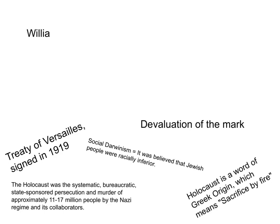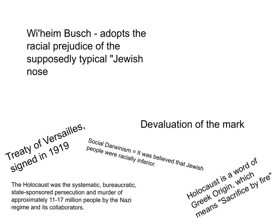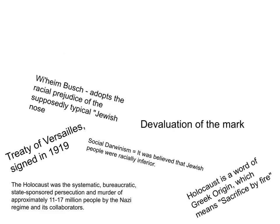We also talked about Wilhelm Busch — I'm giving the American version of his name — who is the person who adopted the racial prejudice of the supposed typical so-called 'Jewish nose.' We also talked about who the SS are. The SS was basically Hitler's army and go-to people. It stood for two things — they were known as both the shield squadron, or in German, the Schutzstaffel.